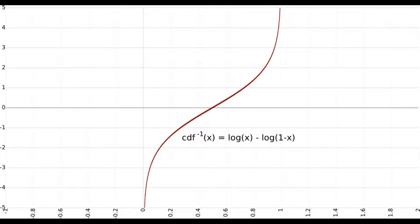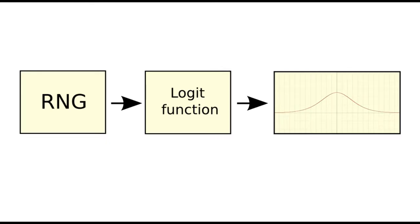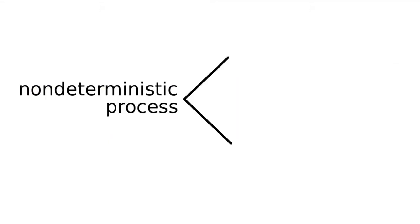The logit function is completely deterministic, and it maps a random number from a uniform random number generator to the logistic distribution. So we have successfully separated a non-deterministic process into a deterministic component and a random number generator.